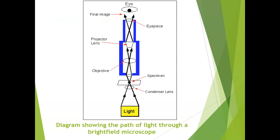This diagram shows the path of light through the brightfield microscope. Light leaves the source, which is located under the stage, and passes through the condenser before passing through the specimen on the slide. Next, it moves through the objective, the eyepiece, and then to the eye. Of note, light traveling through this path gets inverted during this journey, such that when you observe something like the letter E, it will be upside down and flipped when you see it through the microscope.